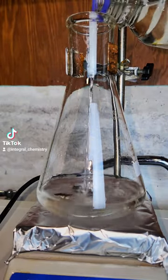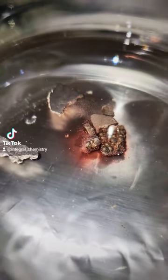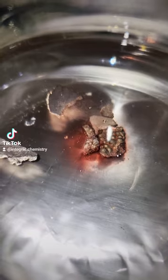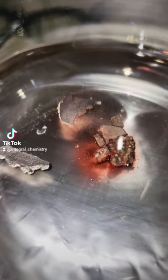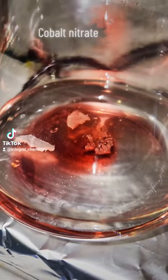To dissolve the cobalt, I make a dilute nitric acid solution by adding a little bit of nitric acid to a lot of water. As the cobalt begins to dissolve, you can see a vivid red cobalt nitrate begin to form in the solution.